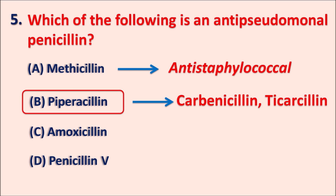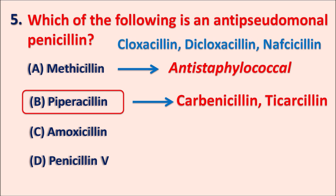Nowadays resistance is being developed towards methicillin, which results in MRSA — methicillin-resistant Staphylococcus aureus infections. Normally, methicillin can act against Staphylococcus aureus infections. Similarly, other drugs within this category include cloxacillin, dicloxacillin, and nafcillin — all commonly known as anti-staphylococcal penicillins.